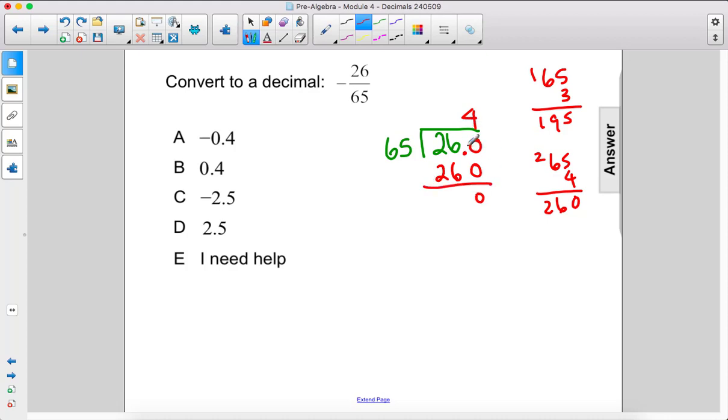No remainder. So we just move that decimal up and we're done. The answer is 0.4. However, don't forget that negative sign. The answer is still negative. The answer is A.